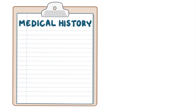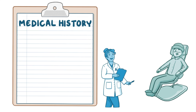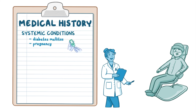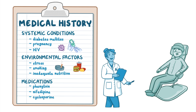The medical history is used to identify systemic factors associated with an increased risk of periodontitis. These include systemic conditions such as diabetes mellitus, pregnancy, and HIV infection; environmental factors such as stress, smoking, and inadequate nutrition; and the use of medications associated with gingival enlargement, such as phenytoin, nifedipine, and cyclosporine.